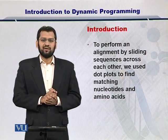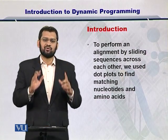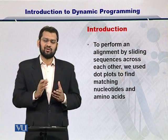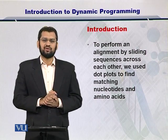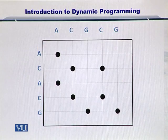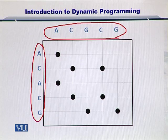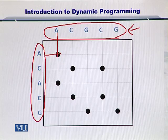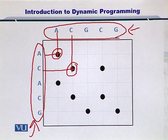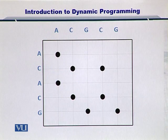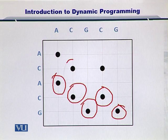To perform alignment, we used a dot plot, in which a matrix was created with one sequence written on top and the other on the left side. For each one of the matching nucleotides or amino acids, we placed a dot on that position. Here is the matrix we were using, with sequences written on top and on the left. Since these are DNA or RNA sequences, the matching positions were indicated by dots — for example, C matched with C, A matched with A, and so on.